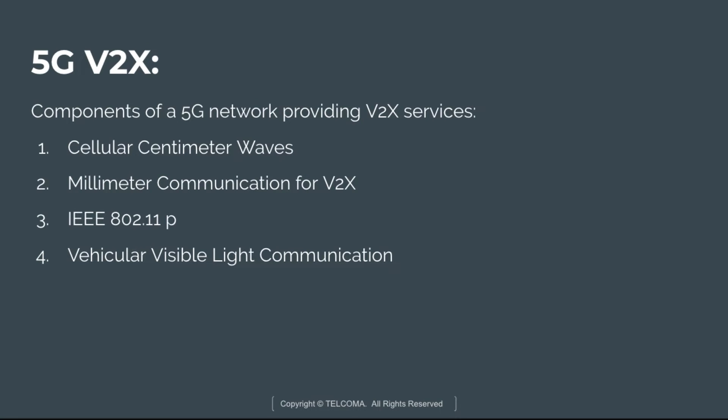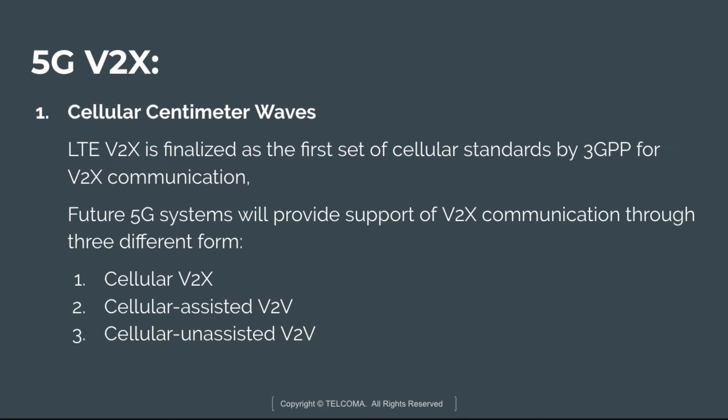The components of the 5G network that provide Vehicle-to-Everything services are: cellular centimeter wave, millimeter wave communication for V2X, IEEE 802.11p, and Vehicular Visible Light Communication. For cellular centimeter wave, LTE V2X was finalized as the first set of cellular standards by the 3rd Generation Partnership Project for vehicle-to-everything communication. Future 5G systems will support V2X communication through three different forms: cellular V2X, cellular-assisted V2X, and cellular-unassisted V2X.